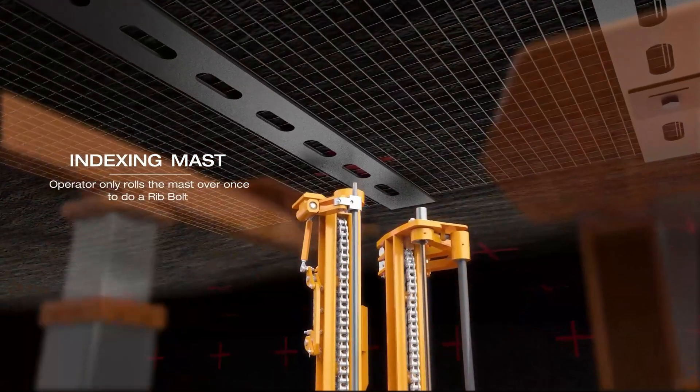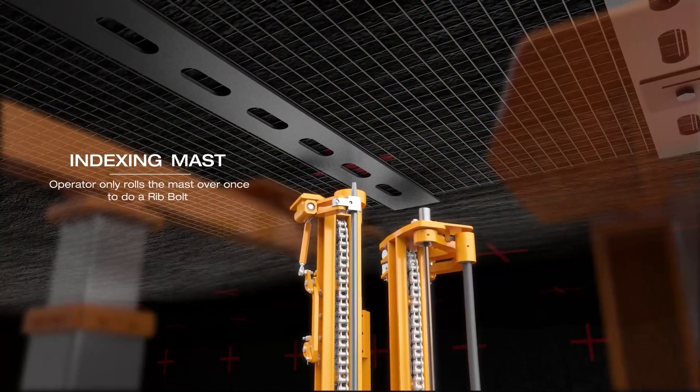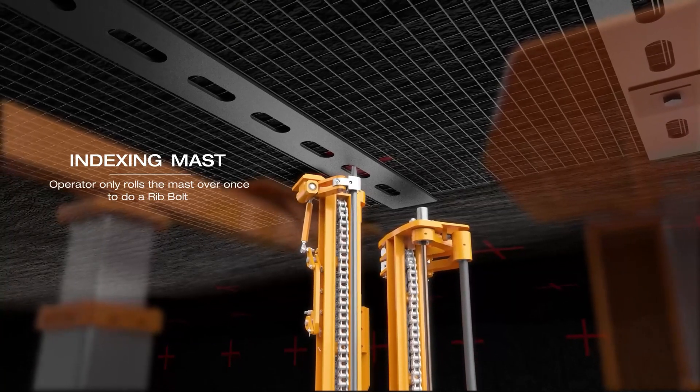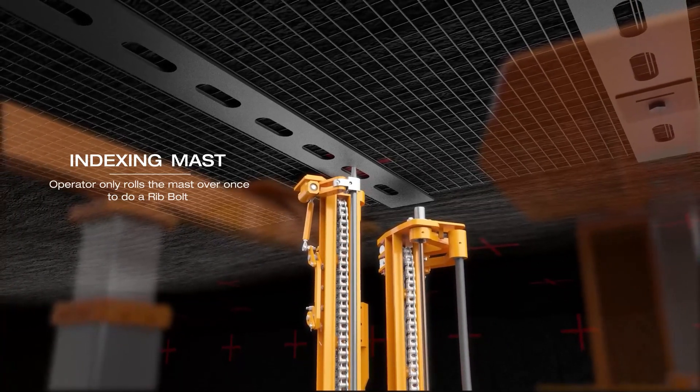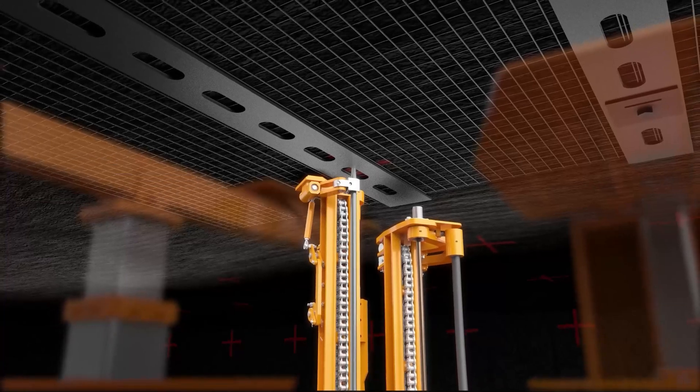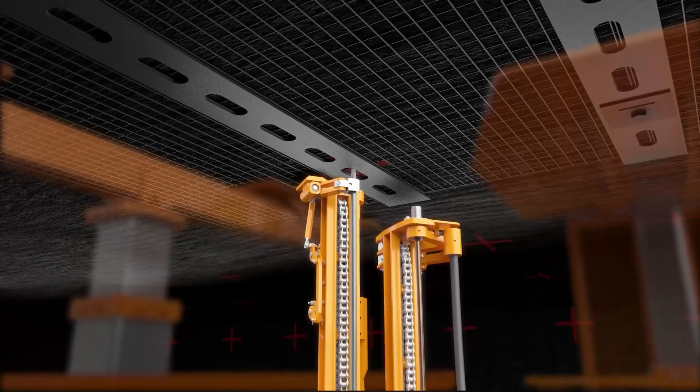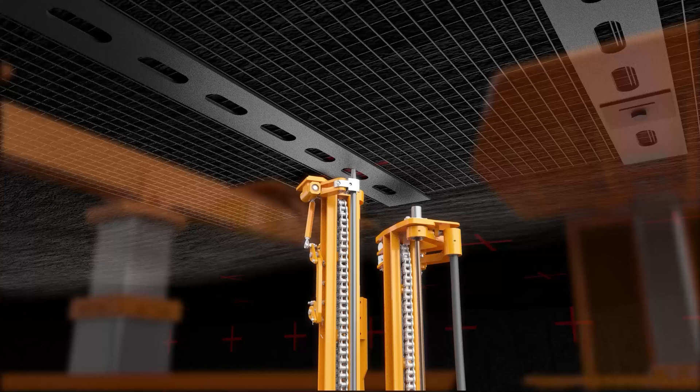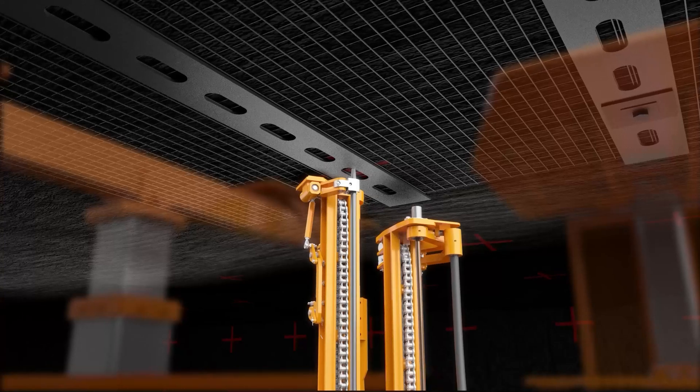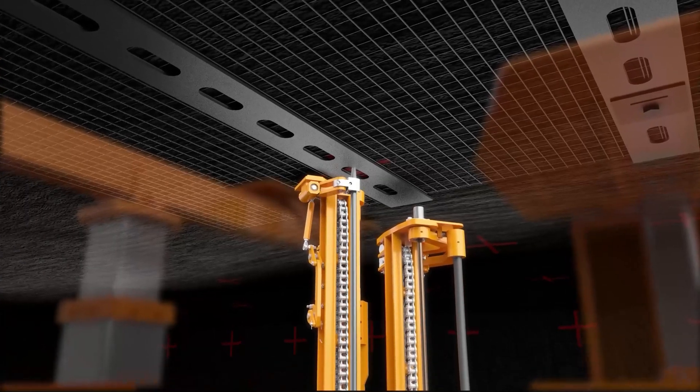The indexing mast system in conjunction with the resin inserter on the drill mast means the operator only rolls the mast over once to do a rib bolt versus twice with a conventional mast. This will significantly reduce side bolting cycle times as trying to line up the bolt with the prior drilled hole with the conventional mast can be very time-consuming.